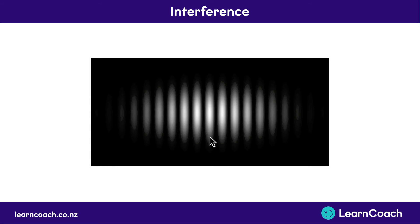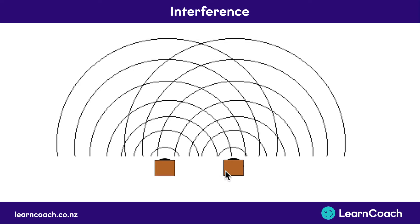As an aside, if you get active noise-cancelling headphones, they do the same thing. This doesn't just work for light — it works for sound or any other type of wave. So if you hooked up two speakers that were perfectly in sync, you would see a whole lot of lines booming out from each speaker, playing the same note, producing the same pattern of lines crossing over each other, giving areas of constructive and destructive interference.